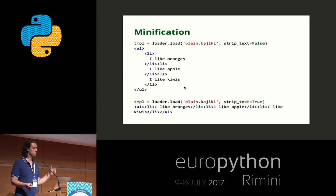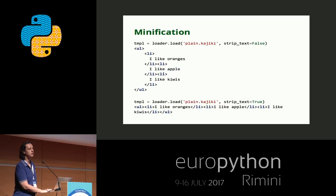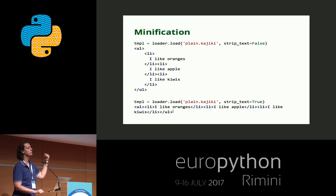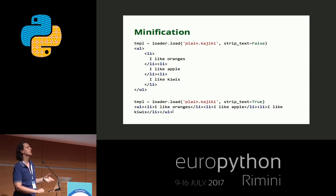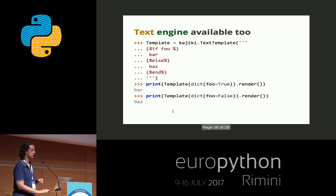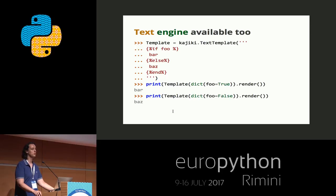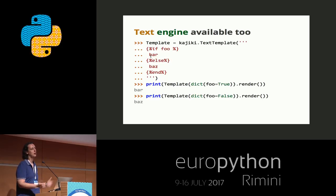Kajiki also does minification. In this case, you can see a template that renders to a set of list items. If you enable the strip text option in Kajiki, it will output a version of the HTML stripped of all empty spaces, which is still valid HTML. It will maintain content of pre tags, scripts, or things like that, but strip anything that it knows it can strip. And of course, like many other template engines, if you are not working with HTML but with something else, you can use it on plain text — like the example of using a template engine with JSON.